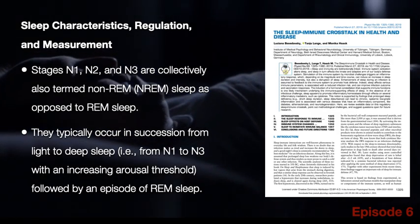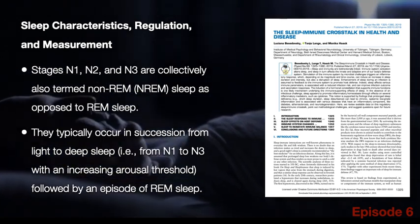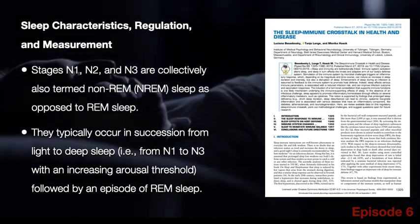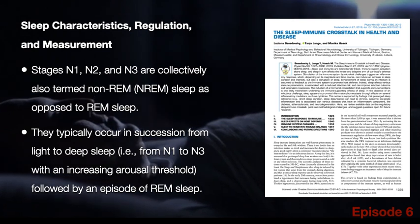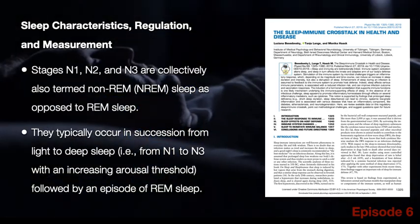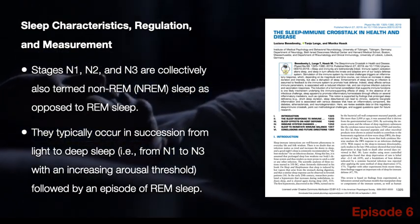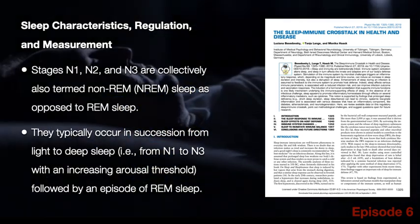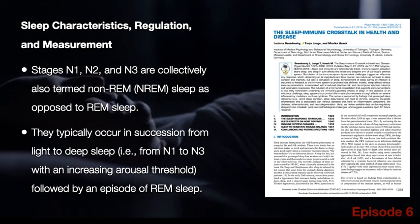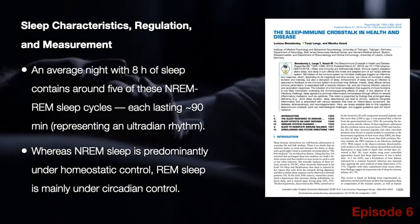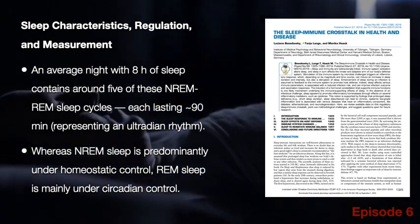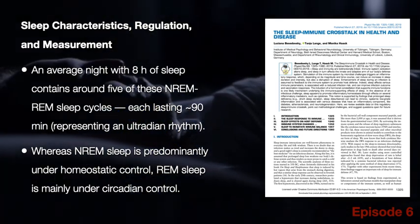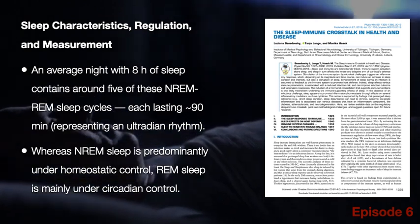Sleep characteristics, regulation, and measurement. Stages N1, N2, and N3 are collectively termed NREM sleep, as opposed to REM sleep. They typically occur in succession from light to deep sleep, N1 to N3, with an increasing arousal threshold, followed by an episode of REM sleep. An average night of eight hours contains around five NREM-REM sleep cycles, each lasting approximately 90 minutes, representing an ultradian rhythm.